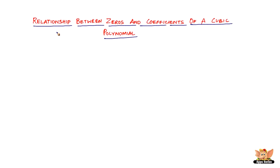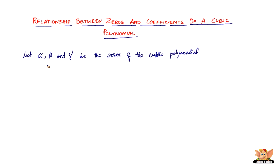In this video let us look into the relationship between the zeros and the coefficients of a cubic polynomial. Now that we've already seen the quadratic polynomial, the cubic polynomial is not very different except for the fact that it's got three zeros. So let alpha, beta, and gamma be the zeros of the cubic polynomial.